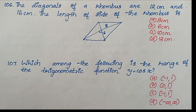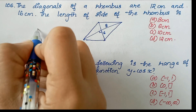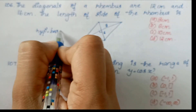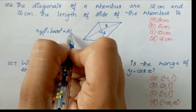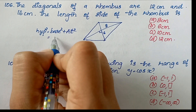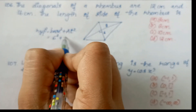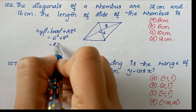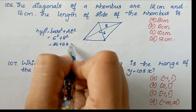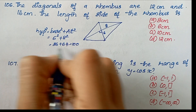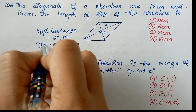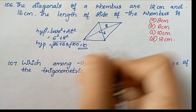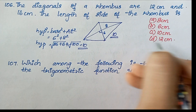Using the Pythagorean theorem: side² = (d1/2)² + (d2/2)² = 6² + 8² = 36 + 64 = 100. Therefore, side = √100 = 10 cm. Option C is the right answer.